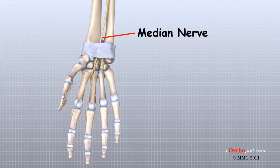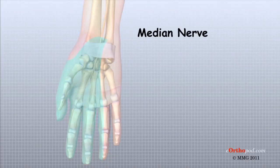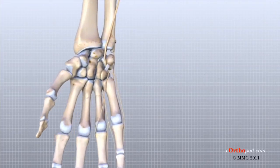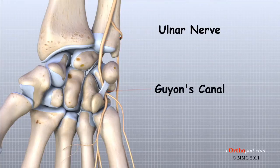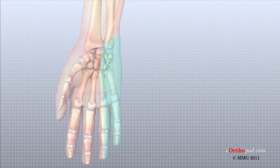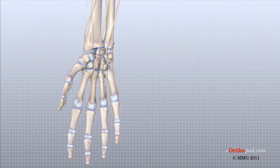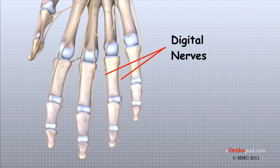The median nerve travels through a tunnel within the wrist called the carpal tunnel. This nerve gives sensation to the thumb, index finger, long finger, and half of the ring finger. It also sends a nerve branch to control the thenar muscles of the thumb. The thenar muscles help move the thumb and let you touch the pad of your thumb to the tips of each finger on the same hand, a motion called opposition. The ulnar nerve travels through a separate tunnel called Guyon's Canal. This tunnel is formed by two carpal bones, the pisiform and hamate, and the ligament that connects them. After passing through the canal, the ulnar nerve branches out to supply feeling to the little finger and half the ring finger. Branches of this nerve also supply the small muscles in the palm and the muscle that pulls the thumb toward the palm. Each finger has a pair of sensory nerves, one on each side, that run to the tip of the finger. These nerves are called the digital nerves and supply sensation to the fingers.